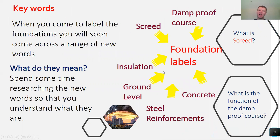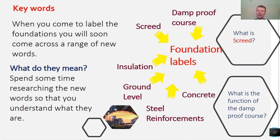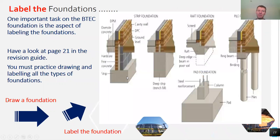There are some key words you'll come across when doing foundation drawings: damp proof course, insulation, ground level, steel reinforcements, and concrete. Make sure you look these up and understand what they are and why we use them — especially the function of the damp proof course, which has come up on so many exam papers.